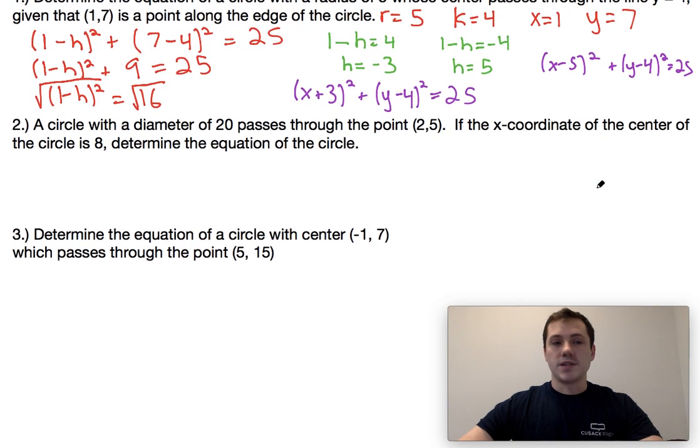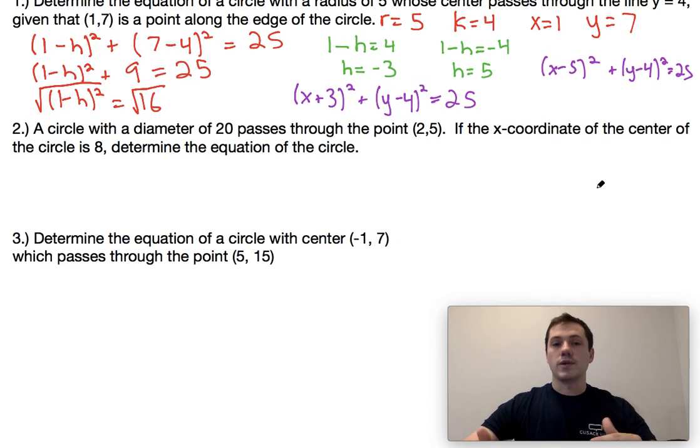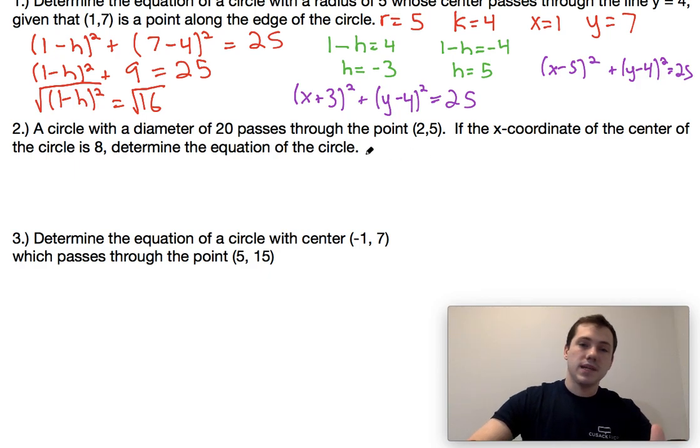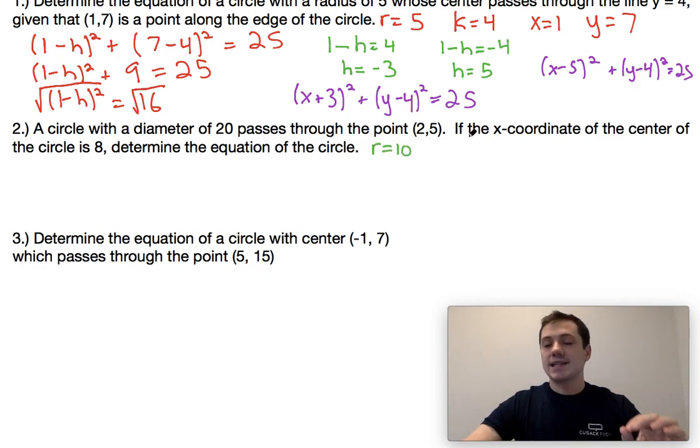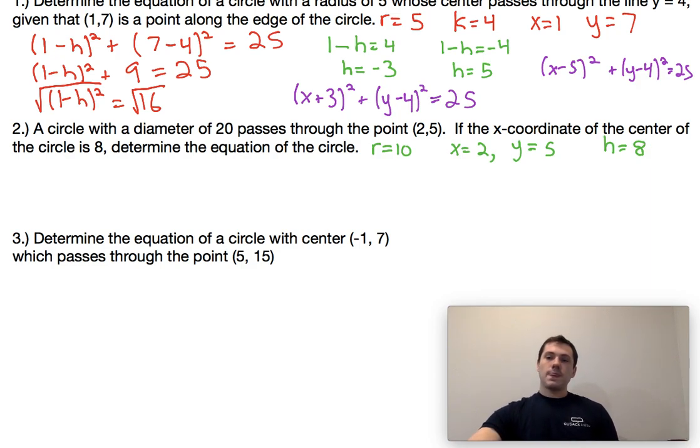Next, let's go ahead and take a look at sample problem two here. So we have a circle with a diameter of 20. Diameter of 20 simply means a radius is 10. Passing through the point 2 comma 5 means that x is 2 and y is equal to 5. And the x coordinate of the center of the circle is 8, so that tells us that h is equal to 8.